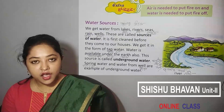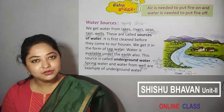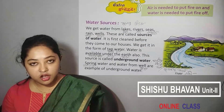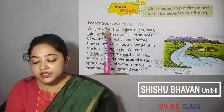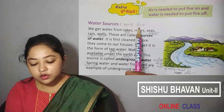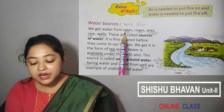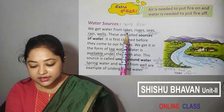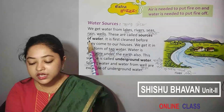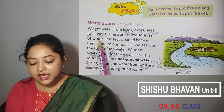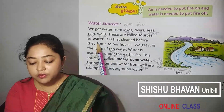Water sources. We get water from the lake, the river, the sea, the rain, the well. These are called sources of water.